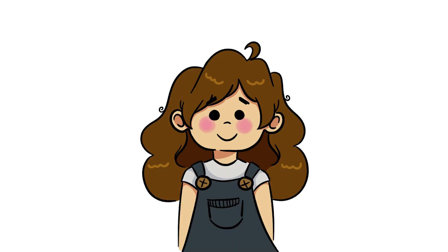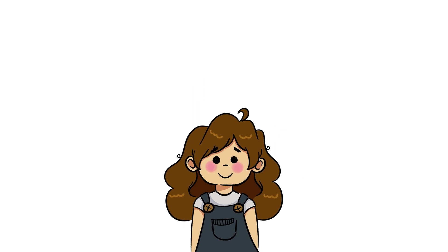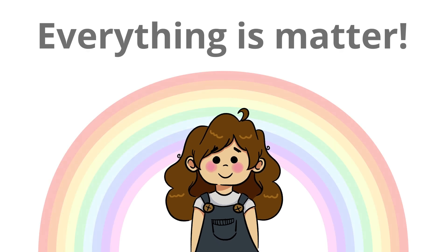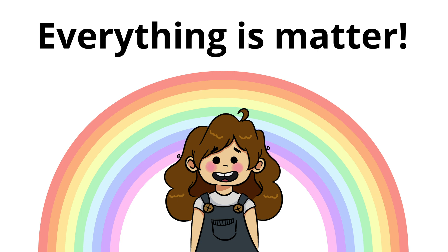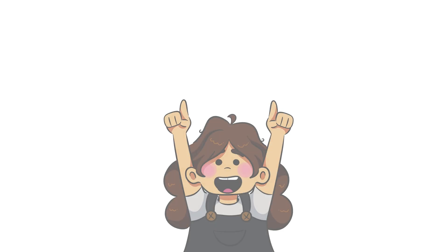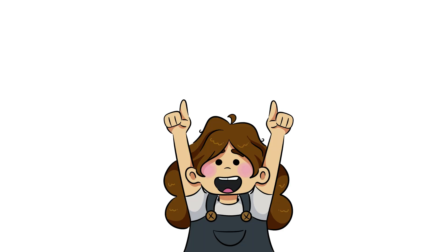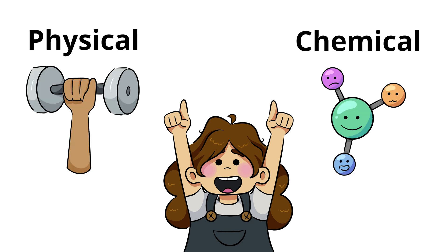Over time, us humans have wondered just what makes up our surroundings. As a result of this questioning, the scientific community has unearthed that everything around us is made up of matter, and more specifically, elements. Matter is something that you can touch, and therefore is defined by two main properties: physical and chemical.